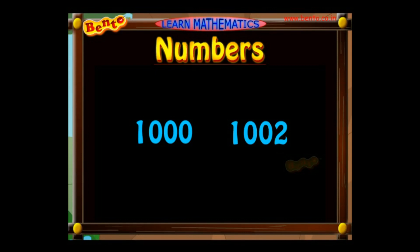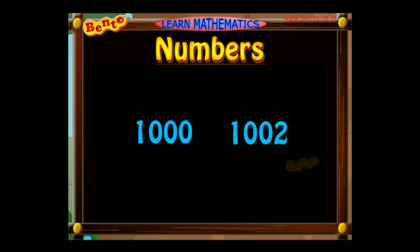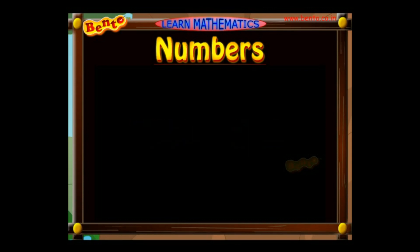A four-digit number has four place values: units place, tens place, hundreds place, and thousands place.